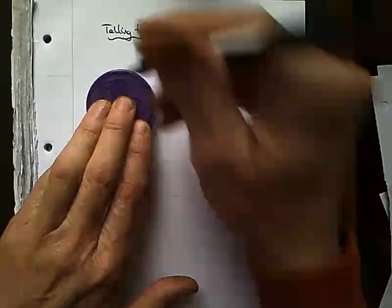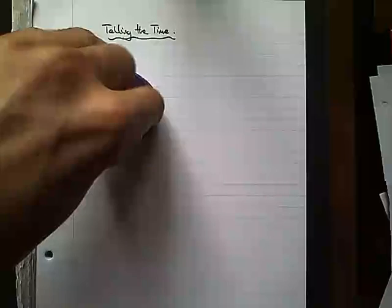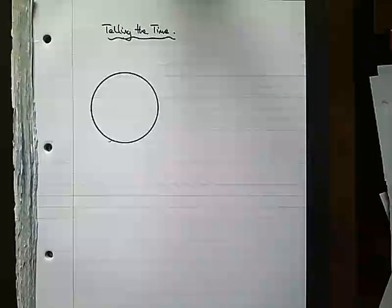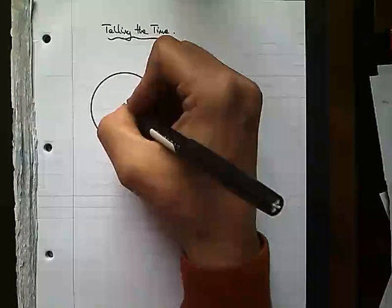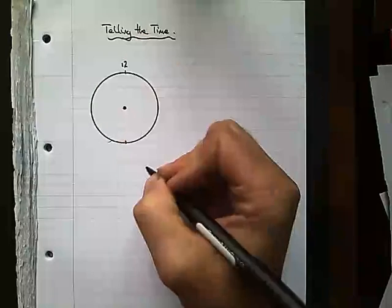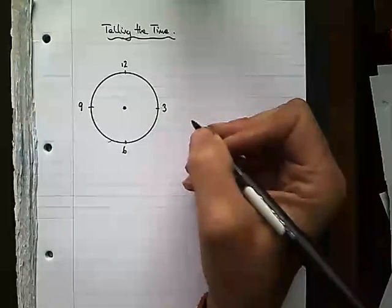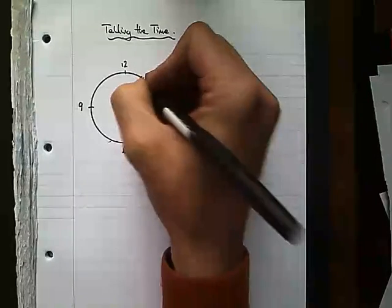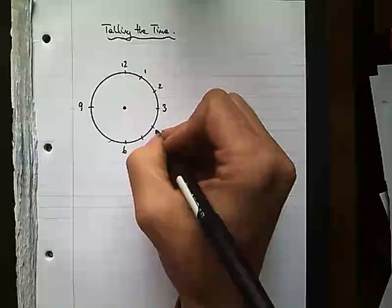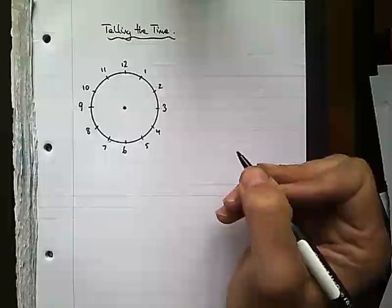I don't have any clocks available, so I'm going to use this lid from the kitchen to draw myself a clock face. It's just a nice circular shape. A clock always has a center where the hands go. At the top is twelve o'clock, at the bottom six o'clock, and to the left and right you have nine o'clock and three o'clock. Then the other numbers go around in order: one, two, four, five, seven, eight, ten, eleven.